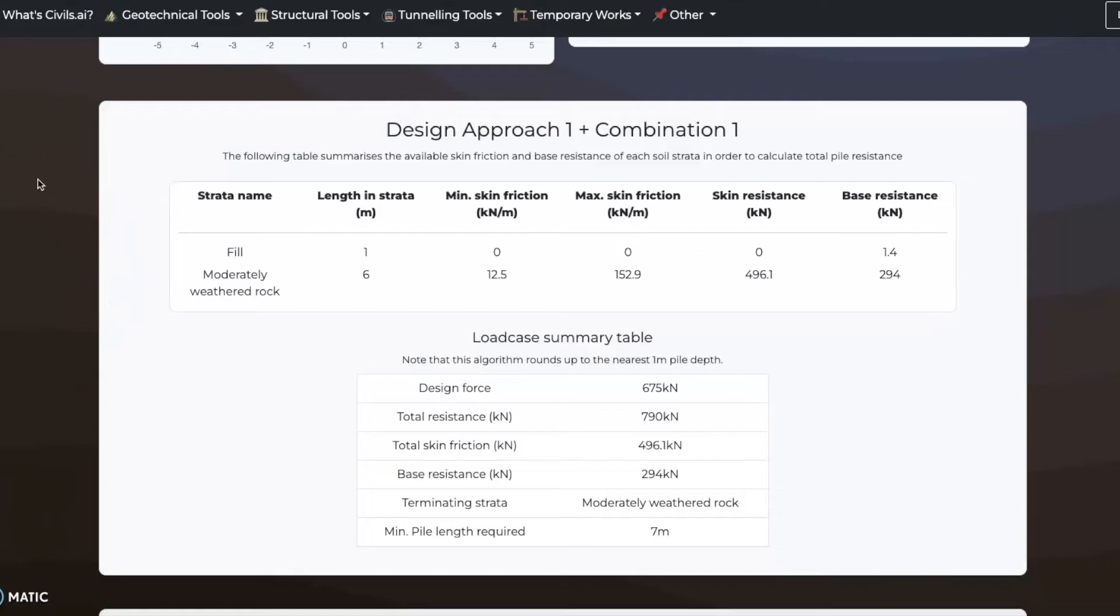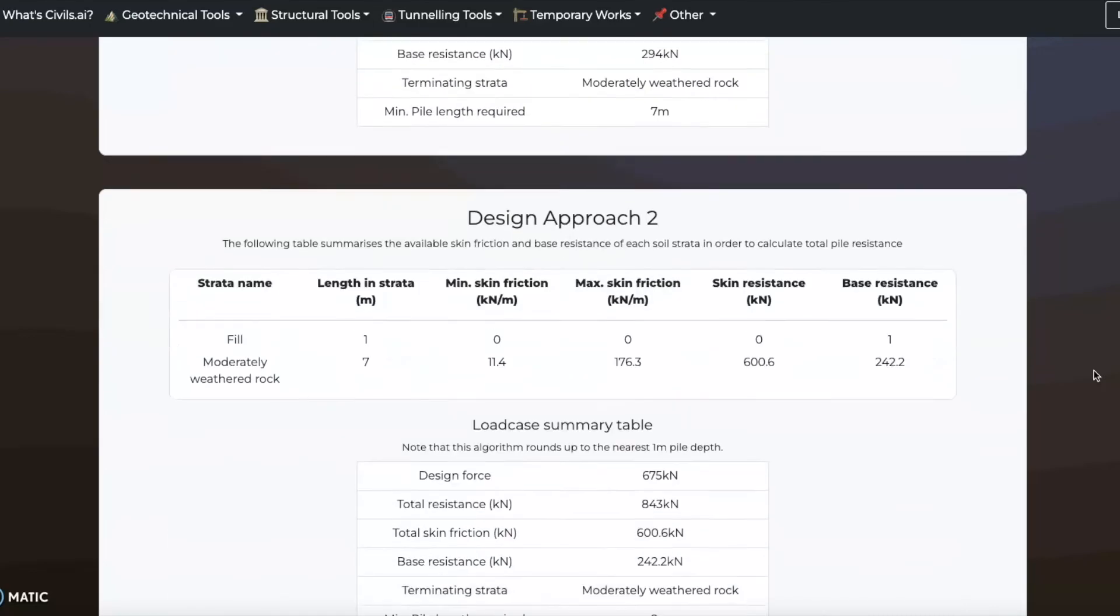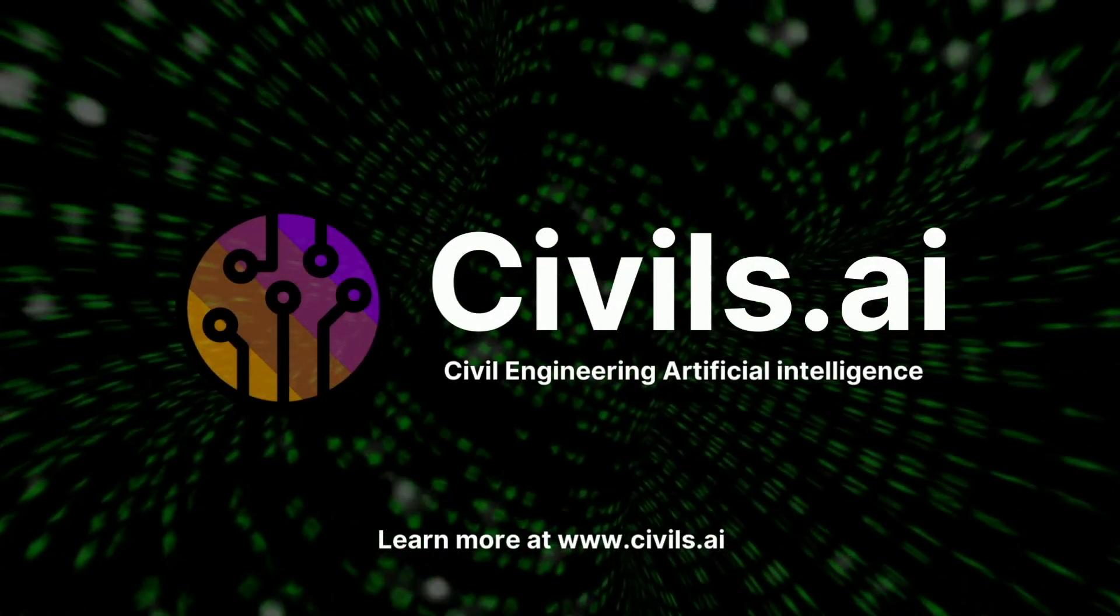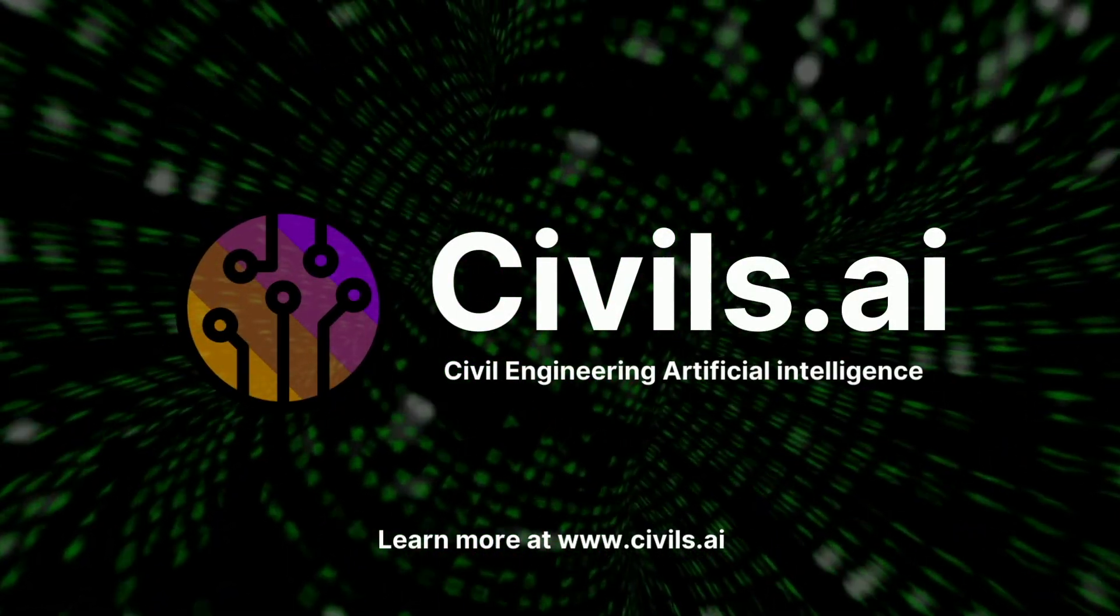We can see using civils.ai that max skin friction and the potential base resistance for each soil layer is being calculated. The analysis works by iterating through the soil one meter at a time, until a sufficient depth is reached. The minimum depth is reached when the end bearing, plus skin friction, exceed the design load. The estimate follows the eurocode. The minimum depth is the worst case of design approach one combination one and design approach two. Discover more at www.civils.ai